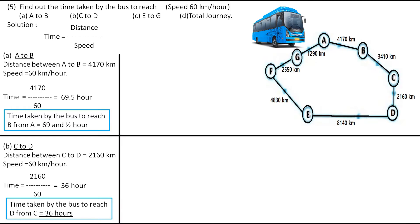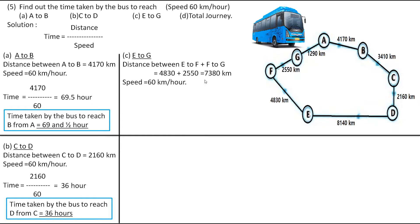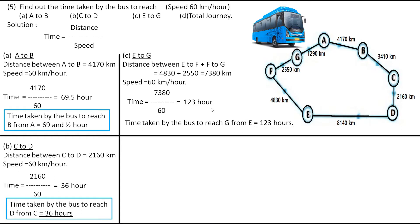The third one is E to G. To find the distance from E to G we add E to F plus F to G, which is 7380 km, and the speed is 60 km/hr. So time = 7380 / 60, which gives 123 hours. The time taken by the bus to reach G from E is 123 hours.